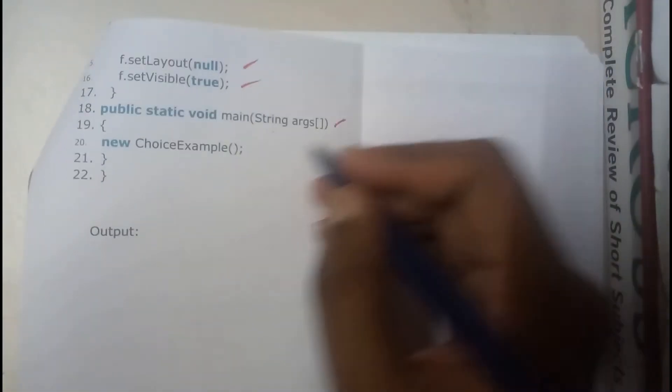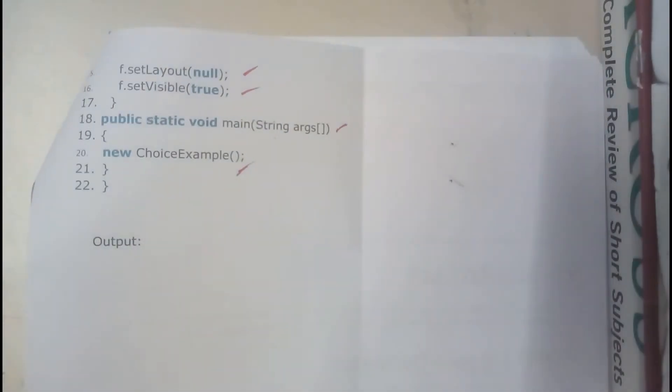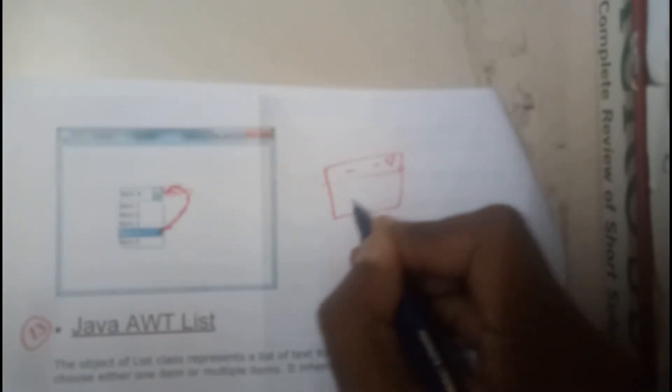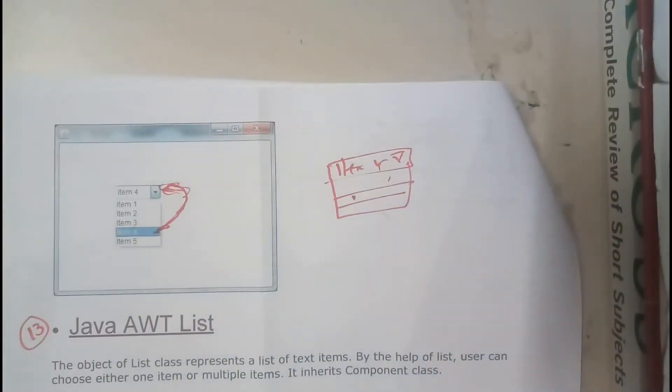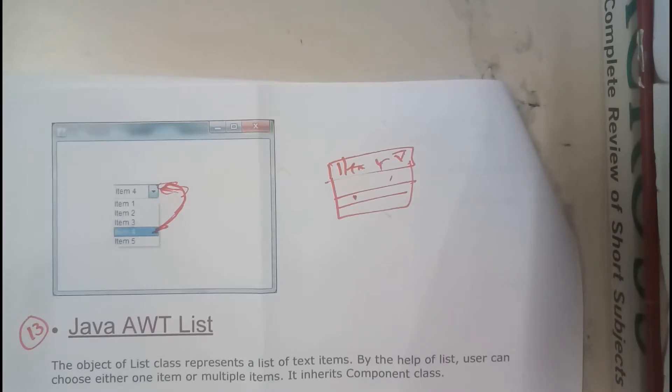Once you compile it, you'll be getting the output. Initially there will be nothing, but once you keep the mouse on an item and select it, it automatically changes to that item. It's going to update according to your selection.